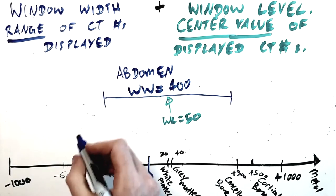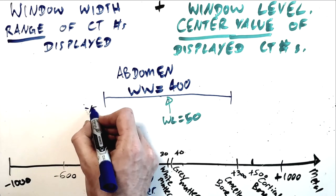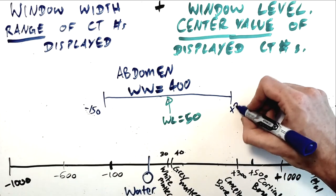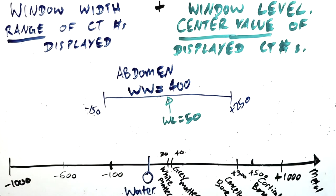This range encompasses the various organs, tissues, fat in the abdomen to assign shades of gray to each of them, while still being narrow enough to provide some differentiation between these solid organs.